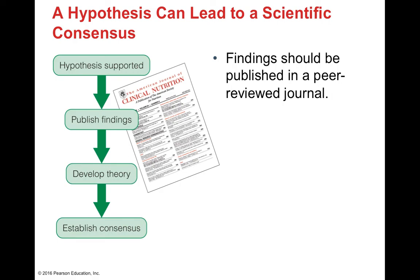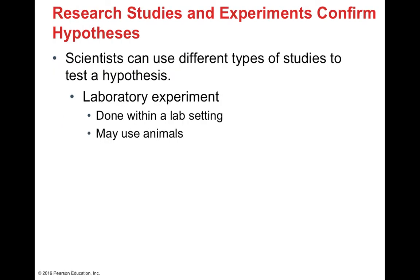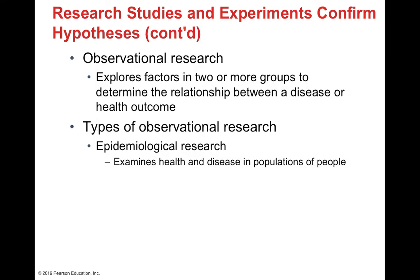There are two main types of research: observational and experimental. Observational research looks at two or more groups to determine the relationship between a disease or health outcome, with a major difference between the groups — such as intake of fat, salt, or level of exercise — and examines how that difference links to the disease or health outcome. Epidemiological research is a type of observational research that looks at disease states at the population level rather than the individual level.